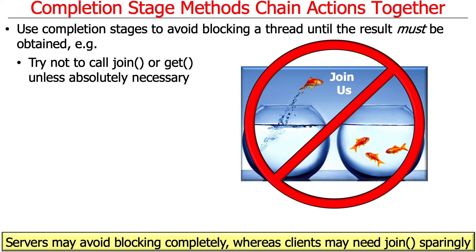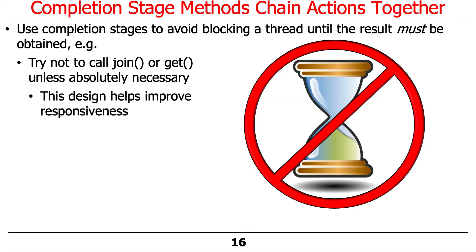Typically, servers may never need to call join — they can simply start things running in the background, and when computations are done, they send a result back to the client. Clients may need to call join occasionally, usually when they absolutely have to display a result to a user. The goal is to be very careful not to use join or get very much. If you're consistent and use CompletableFutures correctly, you can make your design a lot more responsive because you're never blocking unnecessarily — only blocking if you absolutely have to get the results.